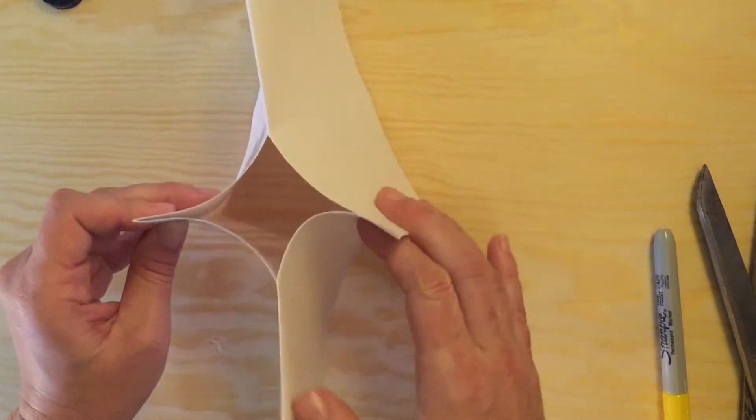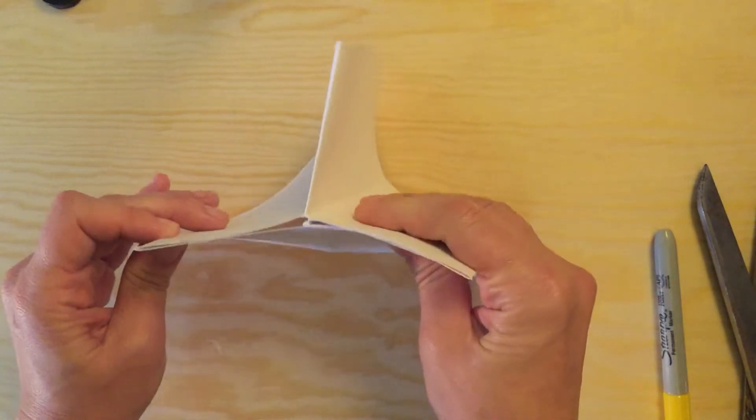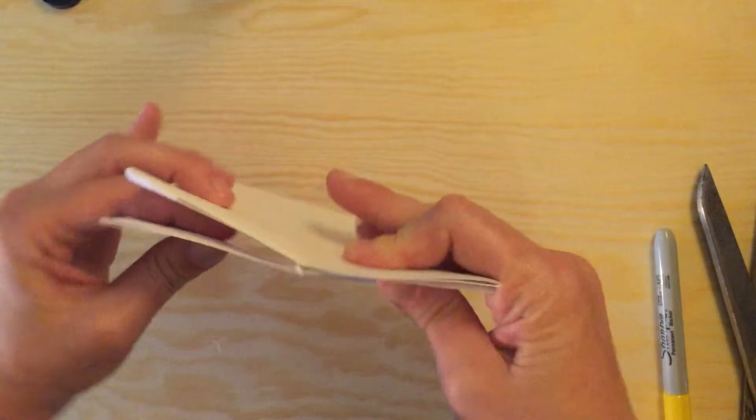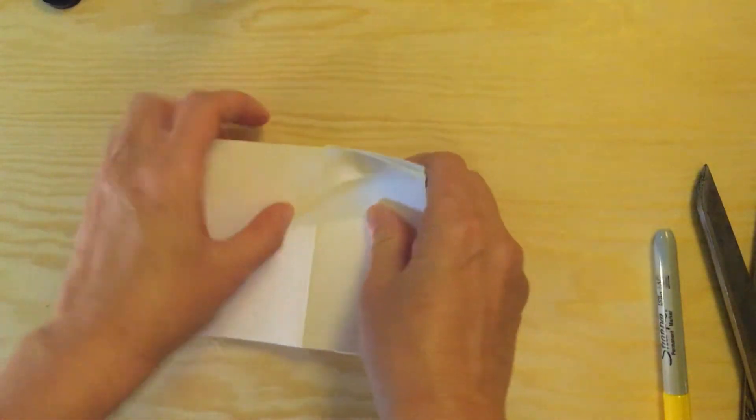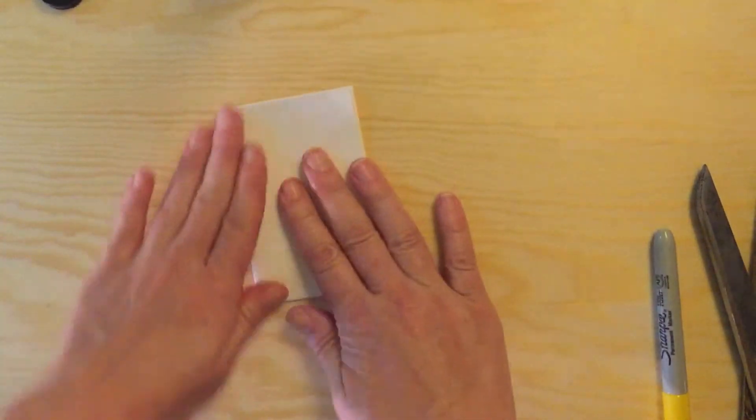Then you want to bring the back page in like so and the front page in like so. Then you can fold it in half and then you have a mini book.